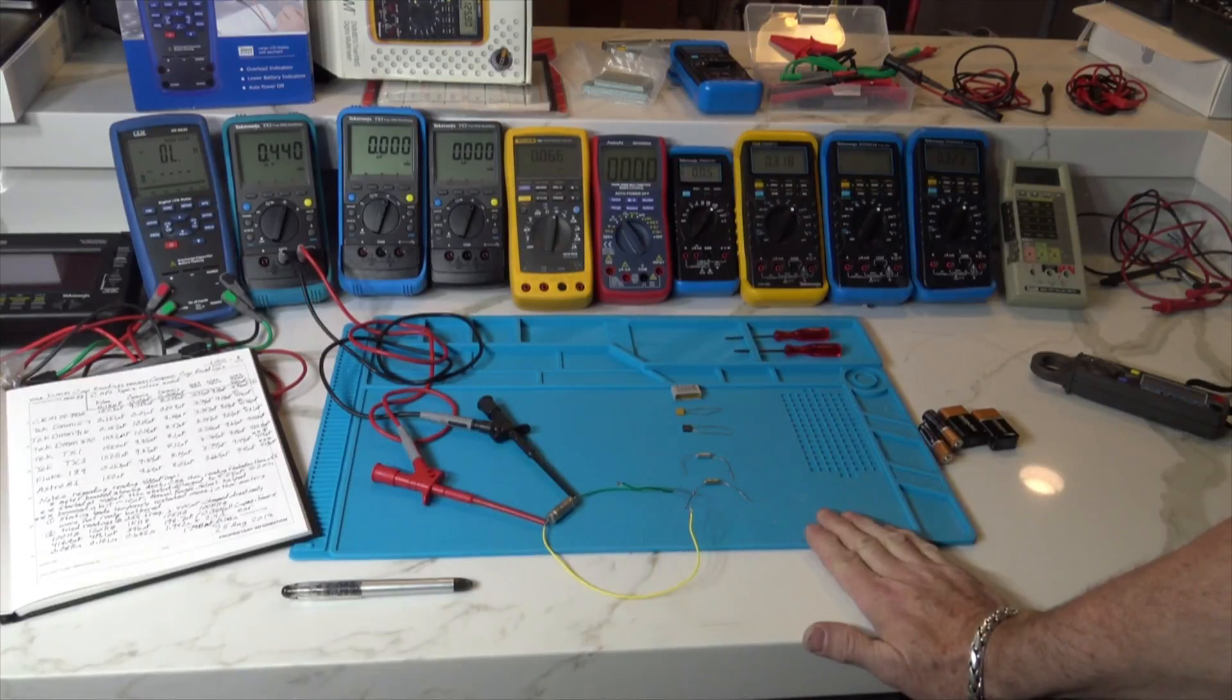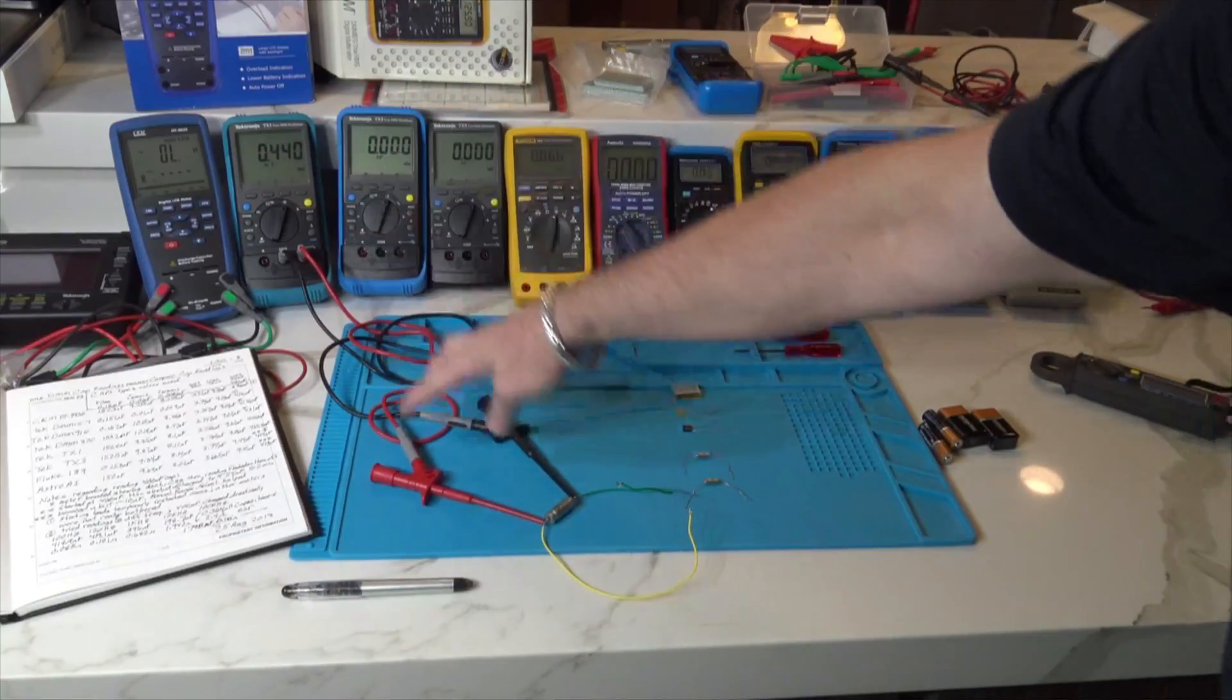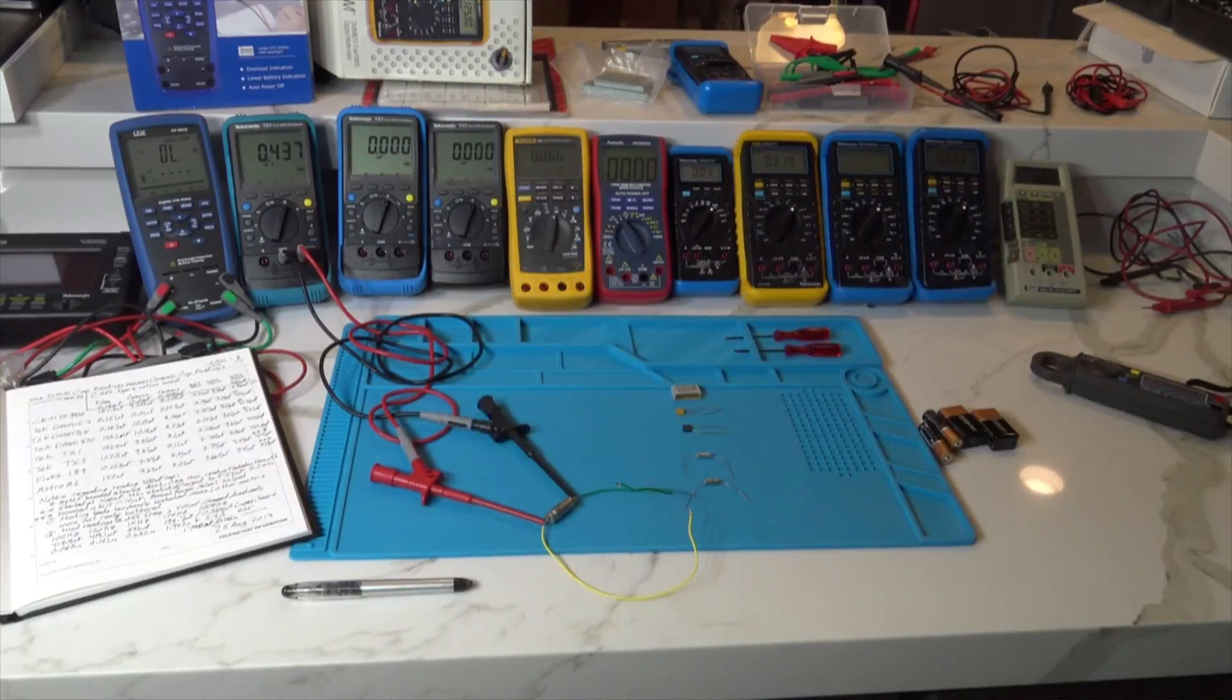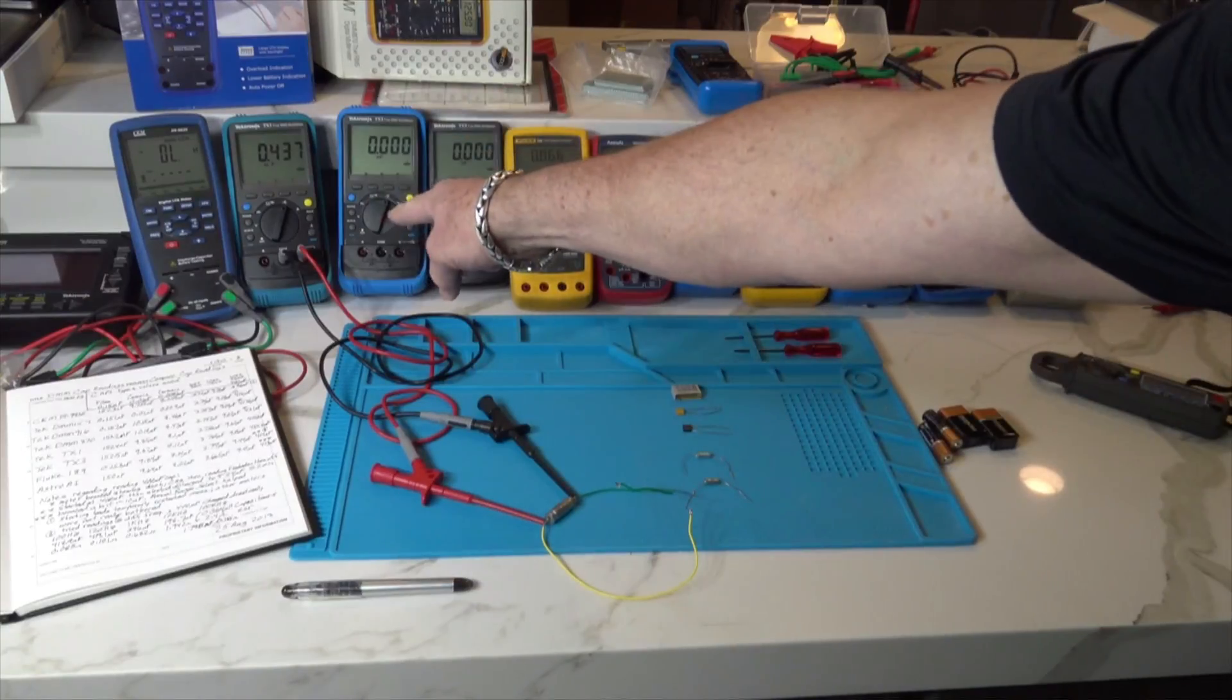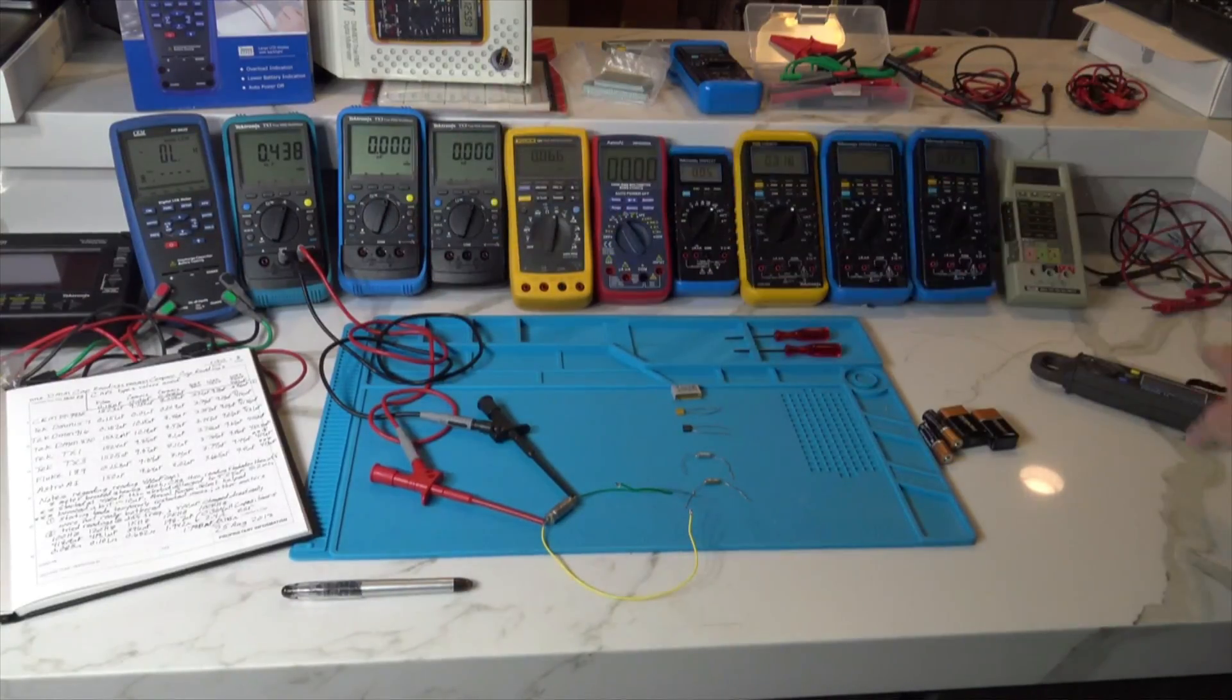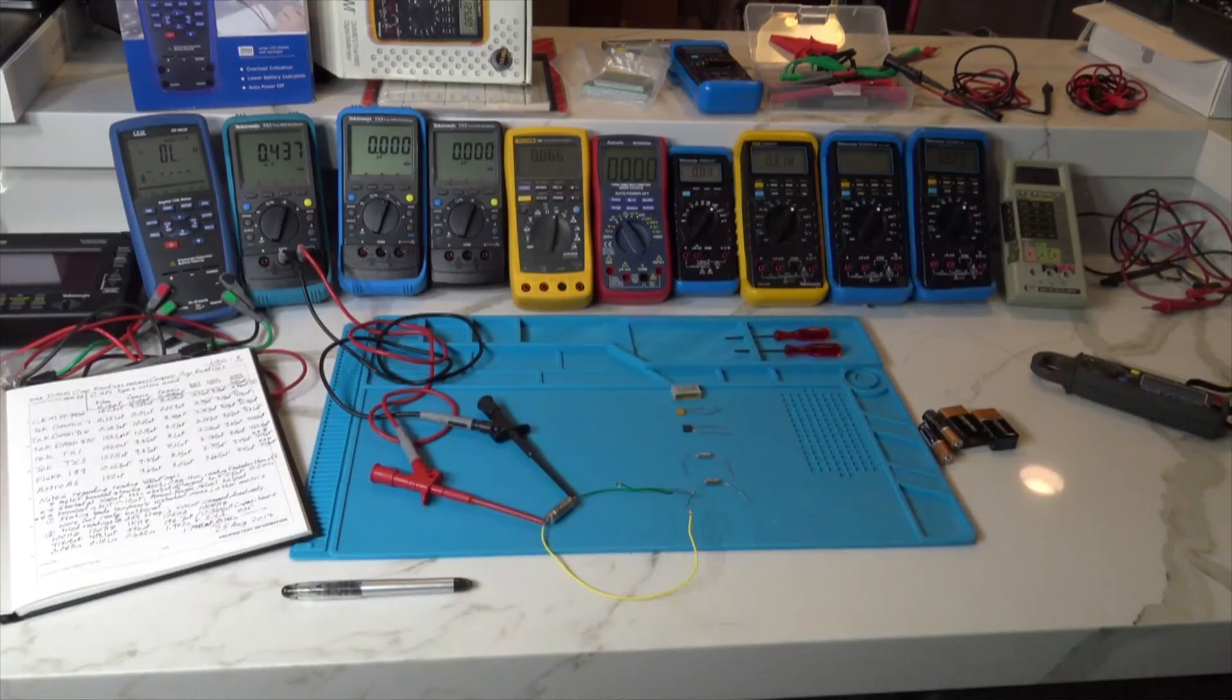The way I took the readings is I used this lead set, other than the LCR. I used this lead set, connected it to the capacitor, and then moved it from meter to meter so that I wouldn't disturb this setup. So it'd be pretty much the same for every meter.